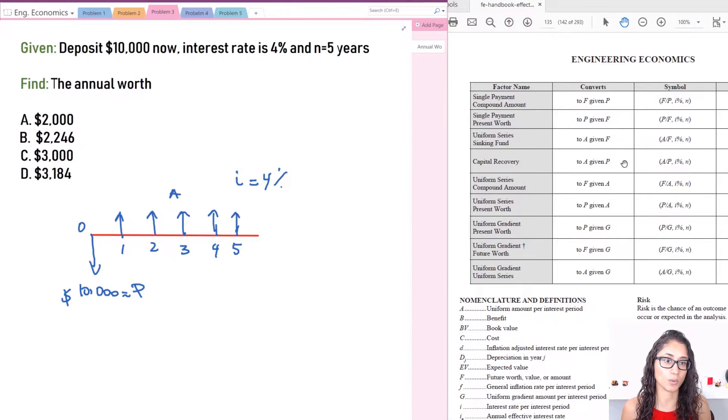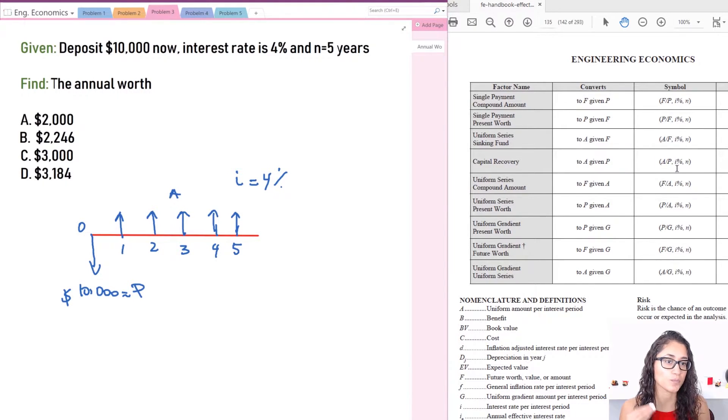So let's look for convert to A given P. So this is the equation. This is what we need. We want to convert to A and we are given P.